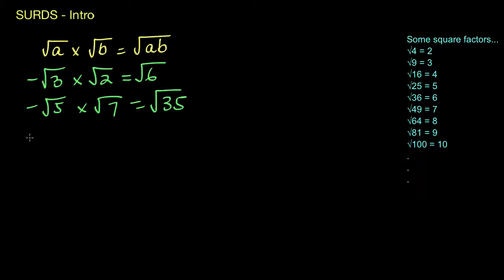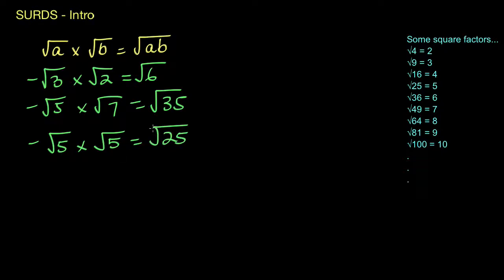We could take it a step further and try something a little trickier. If I said the square root of 5 times the square root of 5, what does 5 times 5 give us? We get the square root of 25. At this stage you have to start recognizing some of the signs — the square root of 25 is going to give you 5. So the square root of 5 times the square root of 5 gives you the square root of 25, which is the whole number 5.